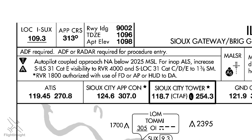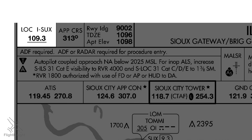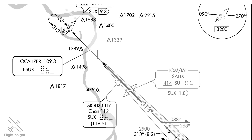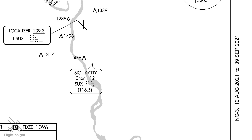An ILS approach is flown by tuning the aircraft's navigation equipment to the correct frequency. The top of the plate lists the frequency for this approach as 109.3. This frequency is for the localizer signal alone, though it's paired with a glide slope signal at a much higher frequency — the navigation equipment will pick that up automatically. In addition to receiving these two signals, the aircraft will also receive an identification signal, which broadcasts the Morse code identifier for the localizer. Here the identifier is ISUX. Unlike a VOR, the localizer and glide slope transmissions aren't broadcast in all directions — they're highly directional, meaning that unless you're lined up with them, you can't rely on getting an accurate signal.